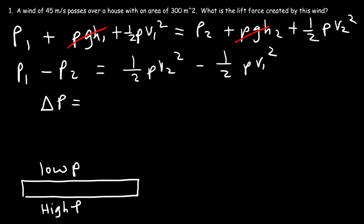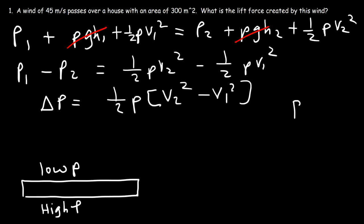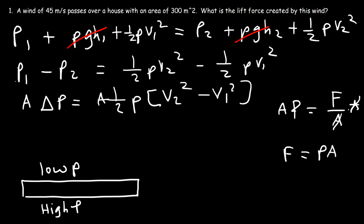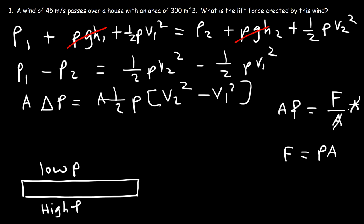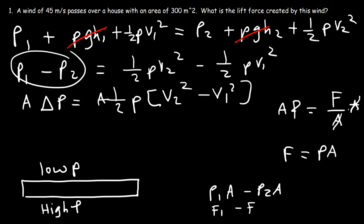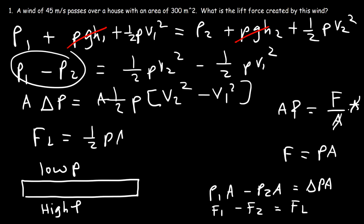The difference in pressure equals ½ρ times the square difference in the speeds. Since pressure is force over area, if we multiply both sides by the area, force equals pressure times area. So the change in pressure times the area gives the difference between F1 and F2, which is the lift force. Therefore, the lift force FL = ½ρA(V2² − V1²).